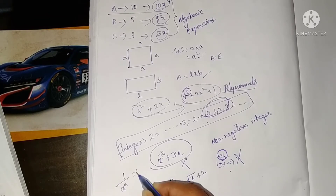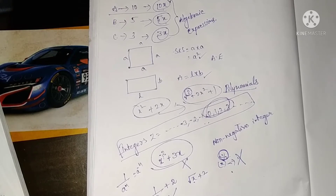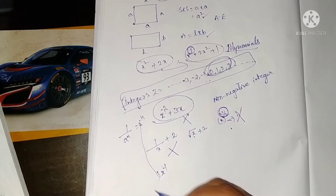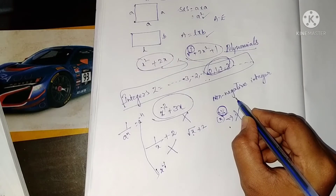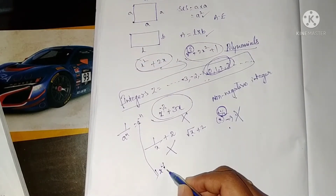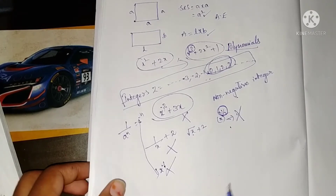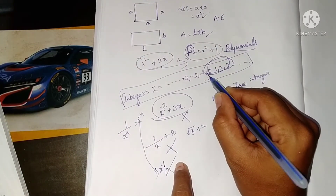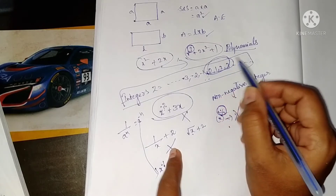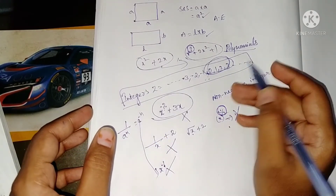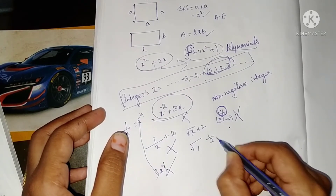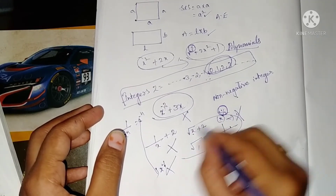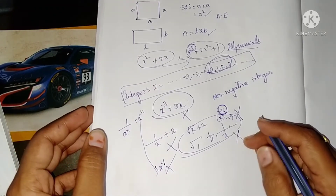You already know the formula: 1/aⁿ = a⁻ⁿ. So 1/x = x⁻¹ — the power is a negative integer, so this is also not a polynomial. A polynomial is an algebraic expression in which the power of the variable is a non-negative integer — either 0 or a positive number. There should be no square roots of variables, no fractions as powers, and the variable should not be in the denominator.